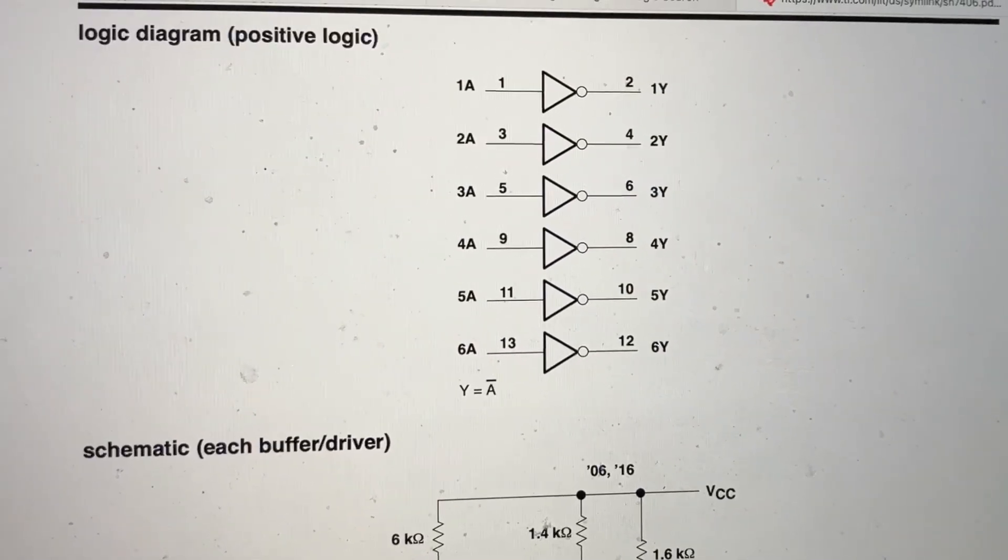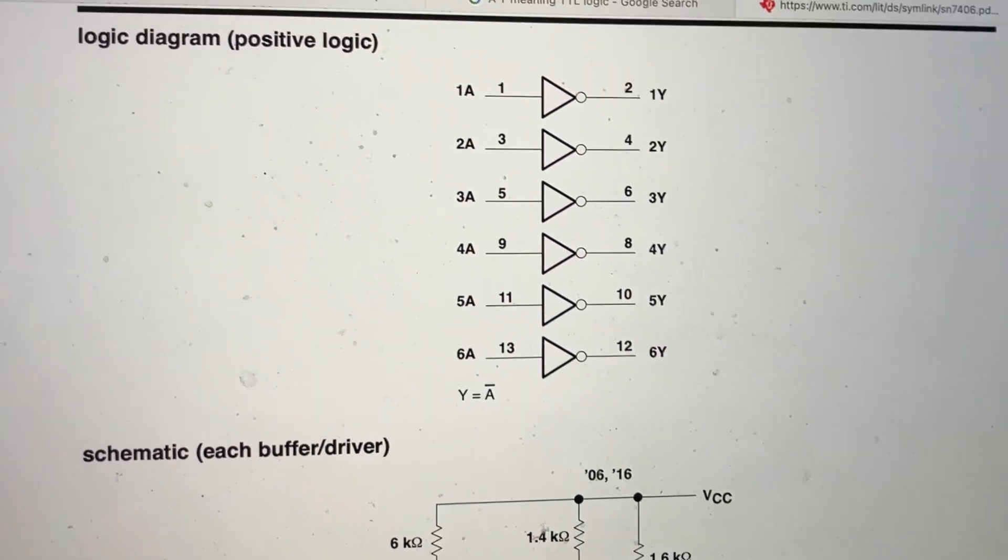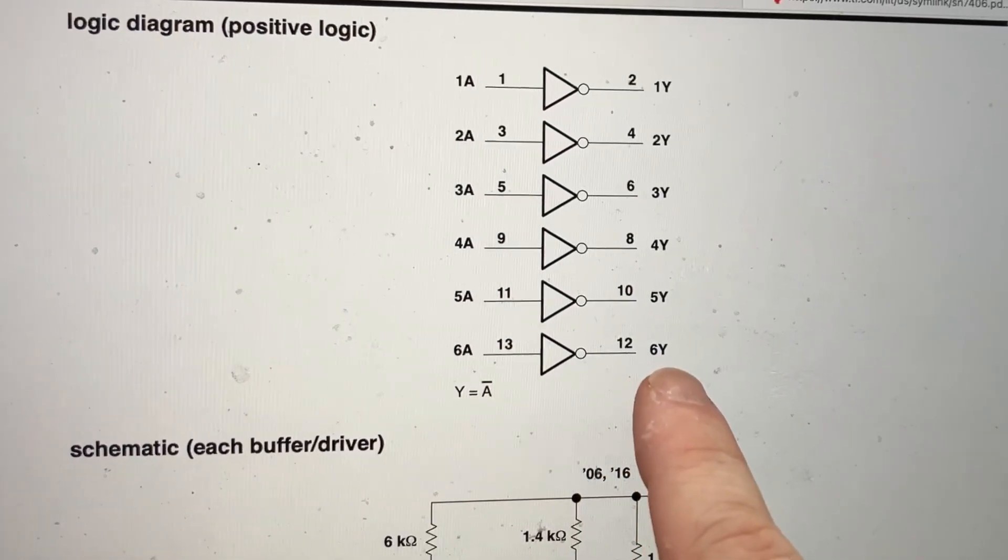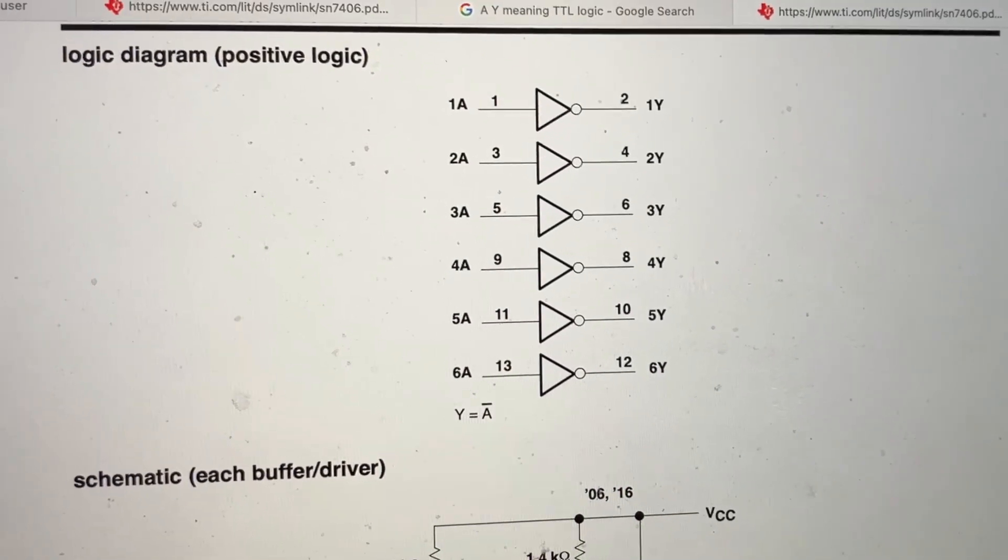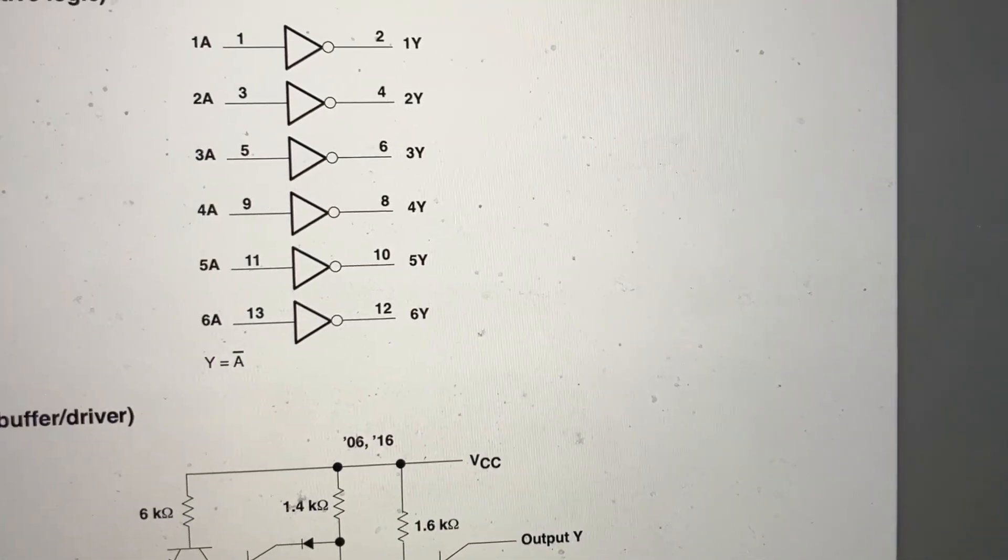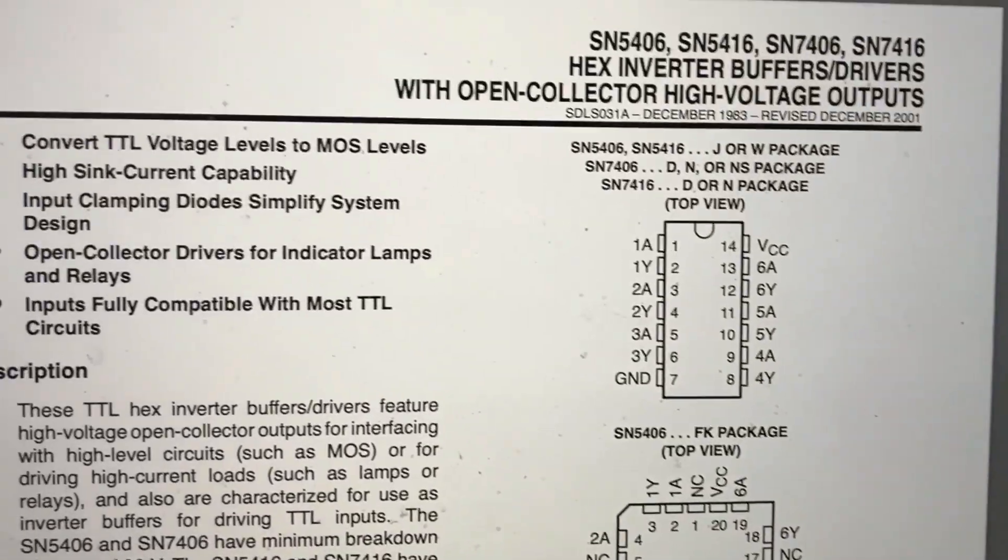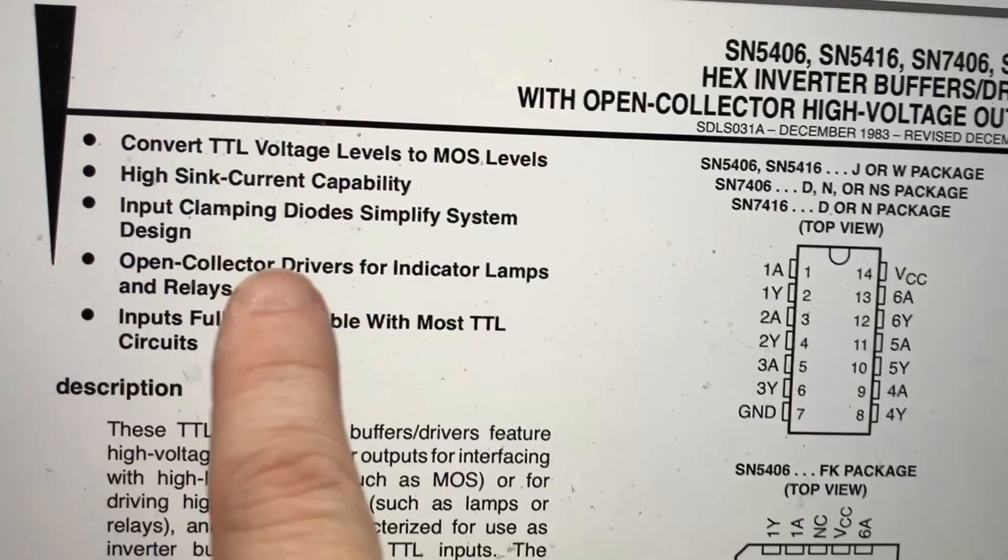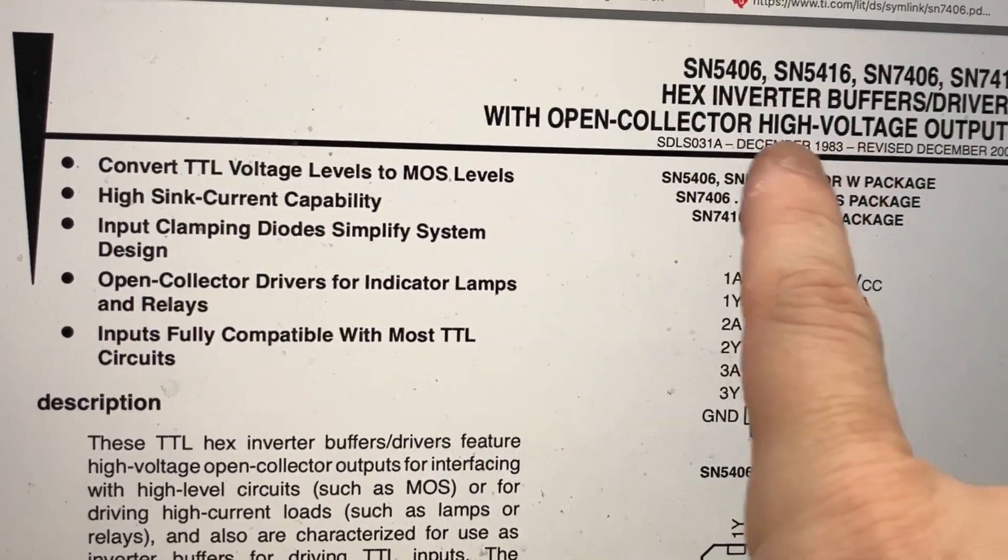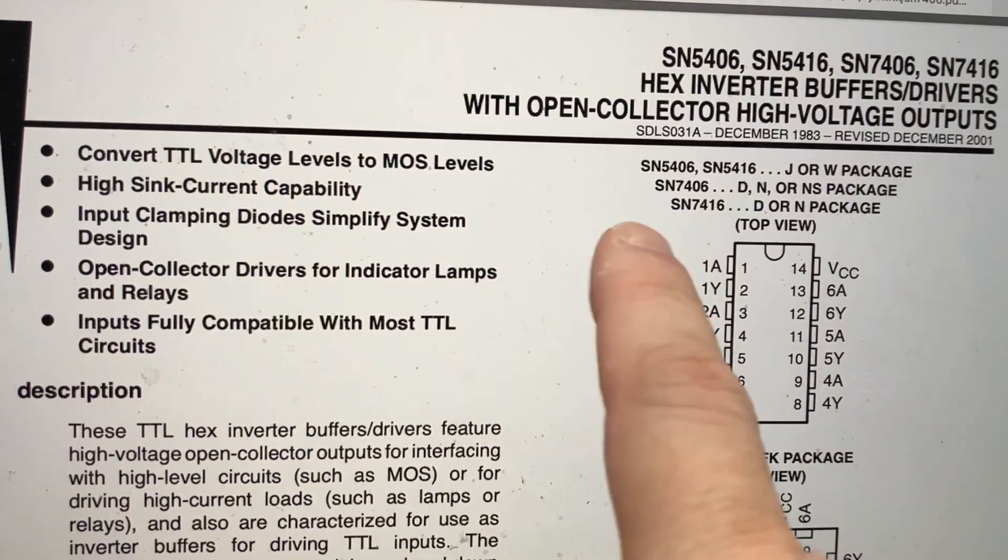So we found the data sheet here. What the heck is A and Y supposed to be? A is for A input and Y is for Y output. The main thing that I wanted to check, and that is true, is that this has open collector outputs. And it's for high voltage, but it's not really high voltage here.